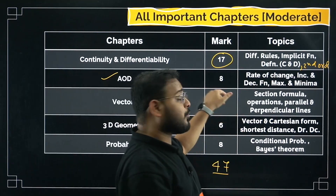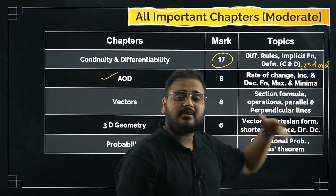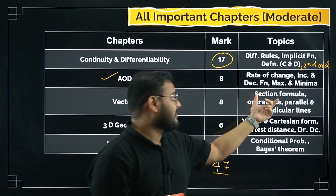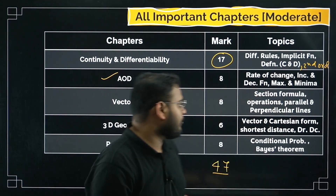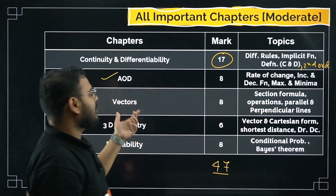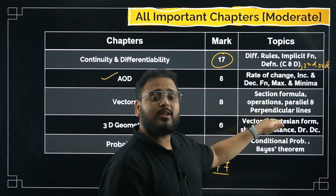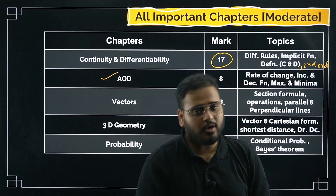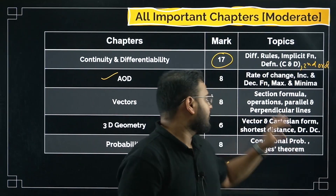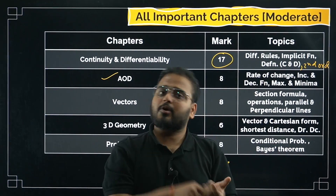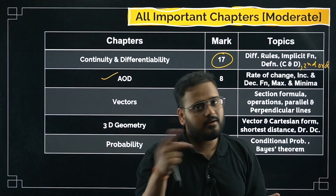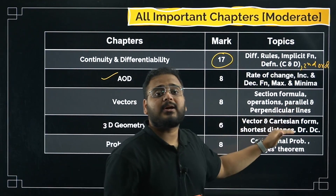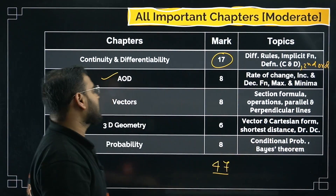Vectors — 8 marks weightage including optionals. Section formula is very important; it has been asked two or three times as a derivation in previous year question papers. Also important: vector operations — addition, subtraction, multiplication; parallel and perpendicular lines — very, very important; cross-product and dot product (scalar product and vector product). So in vectors you have two types of products: scalar/dot product and vector/cross product.